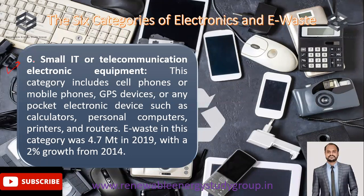The sixth and last category is small IT and telecommunication electronic equipment. This includes mobile phones, cell phones, GPS devices, pocket electronic devices, calculators, personal computers, printers, and routers. Total e-waste in this category was 4.7 metric tons in 2019, with a 2% growth from 2014.